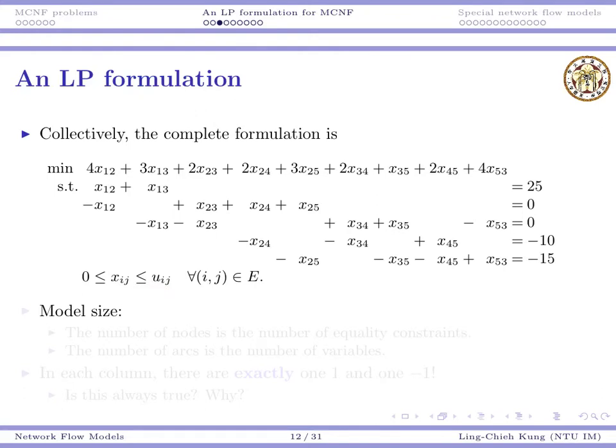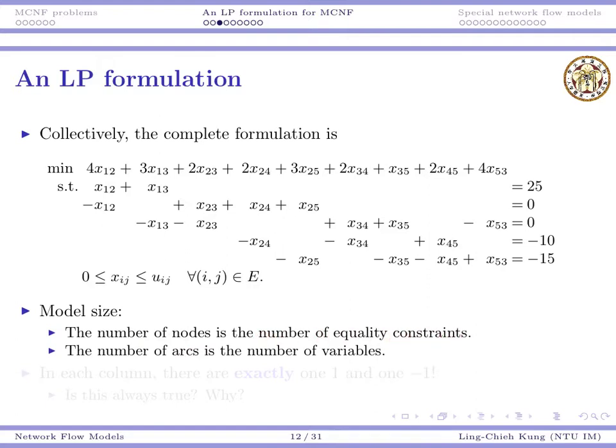One question we may have is about model size. As we may observe, the number of nodes is the number of equality constraints. On the number of nodes. Here, five is the number of equality constraints. Because for each node, we have flow in equals flow out constraint. We have flow balancing constraint. And that's an equality.